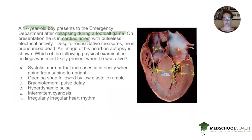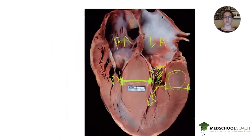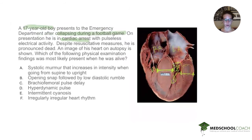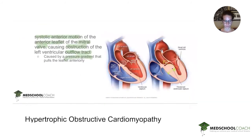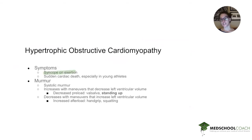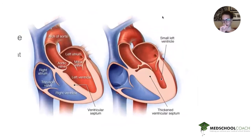So now we know this kid had HOCM. When you see a big interventricular septum on autopsy and hear about a healthy teenager dying during exercise, HOCM should be at the top of your list. Now we need to figure out the physical exam finding. HOCM symptoms include syncope on exertion and sudden cardiac death, especially in young athletes. It also causes a systolic murmur, which increases with maneuvers that decrease left ventricular volume.